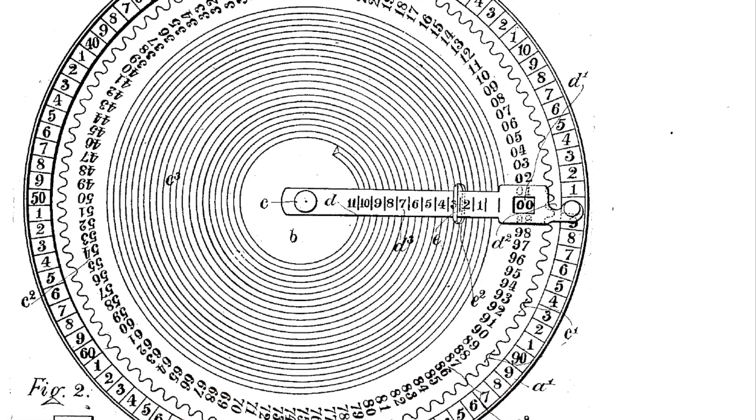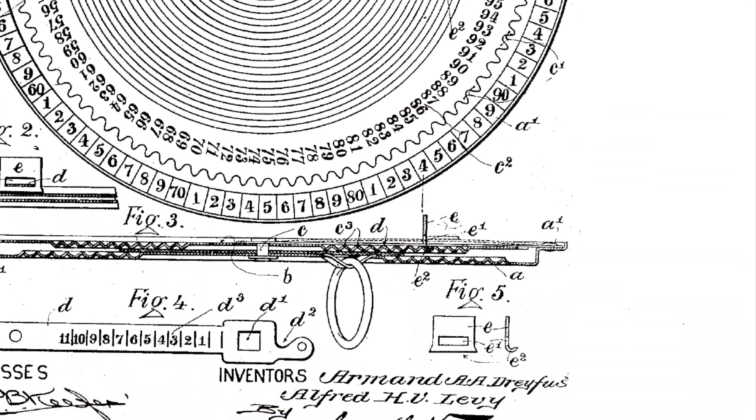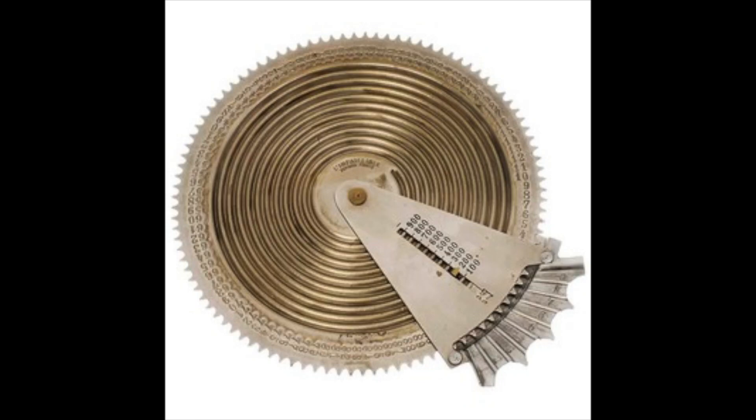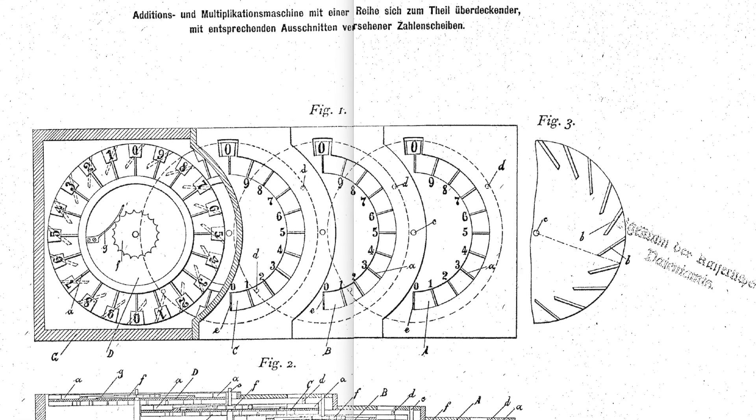The original inventor of this type of device was a gentleman named Jevrem Ugrich. He made a bunch of similar devices, but he never patented them. The only patent he had was from a Pascaline-type device from before he changed his name.